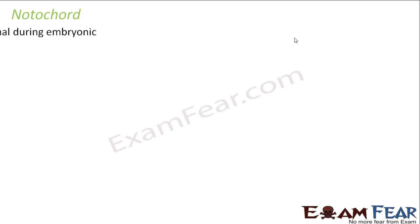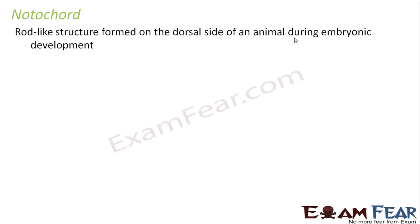The last parameter is notochord. What is notochord? This is a very very important parameter. It is a rod-like structure — the name 'chord' itself tells you it is something like a rod. So it is a rod-like structure which formed on the dorsal side of an animal during embryonic development.